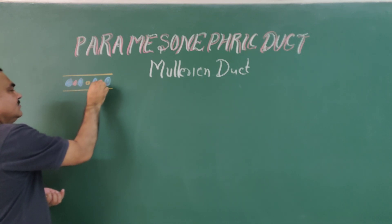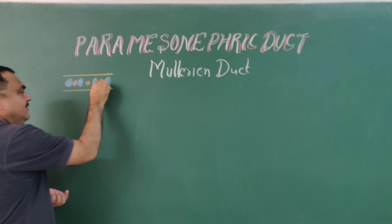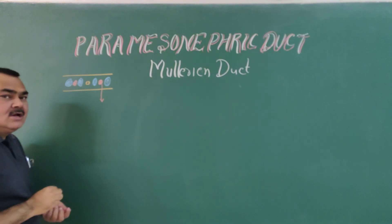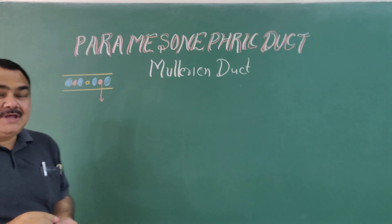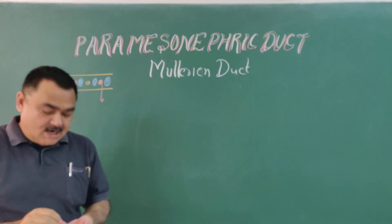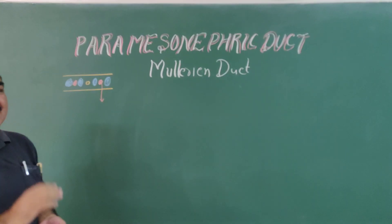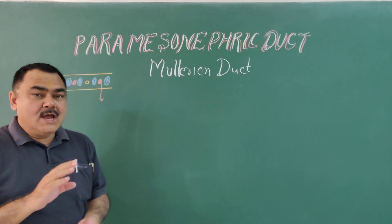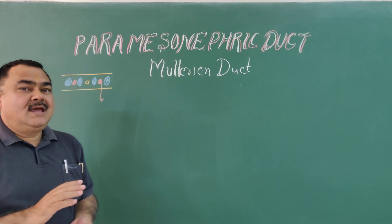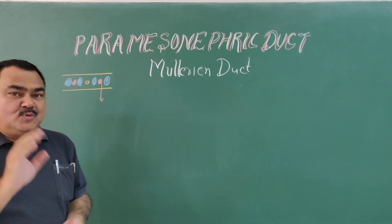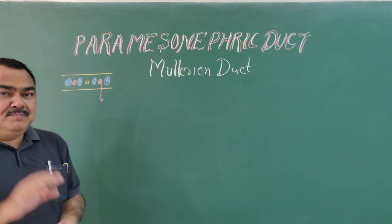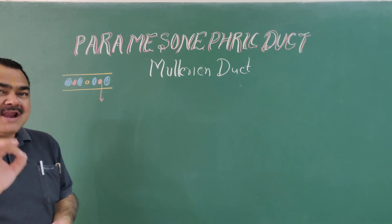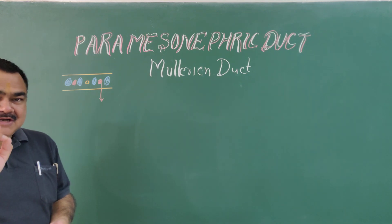This intermediate mesoderm forms the nephrogenic cord, and in the nephrogenic cord, gonads, excretory tubules, mesonephric duct, and paramesonephric duct develop.